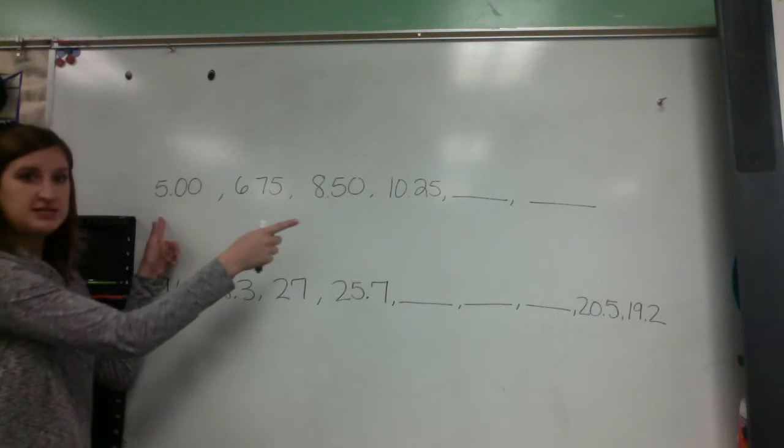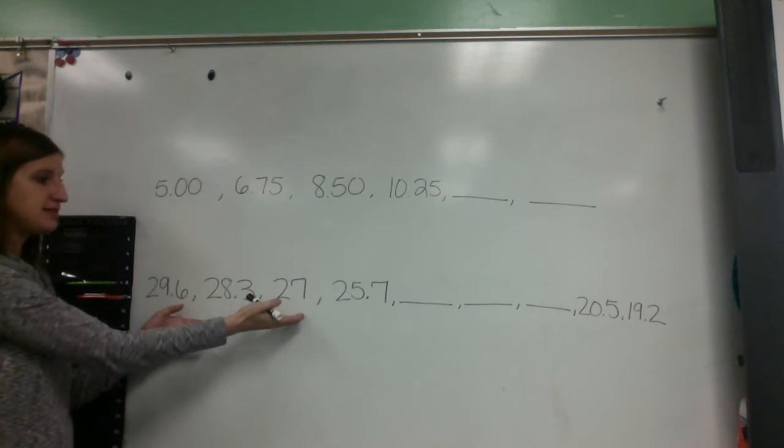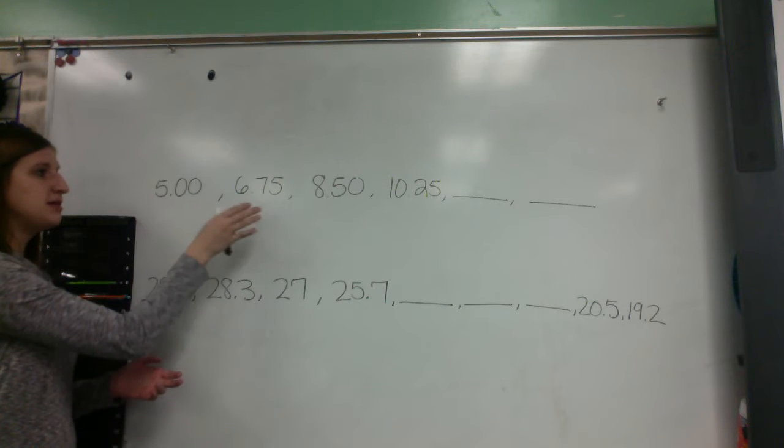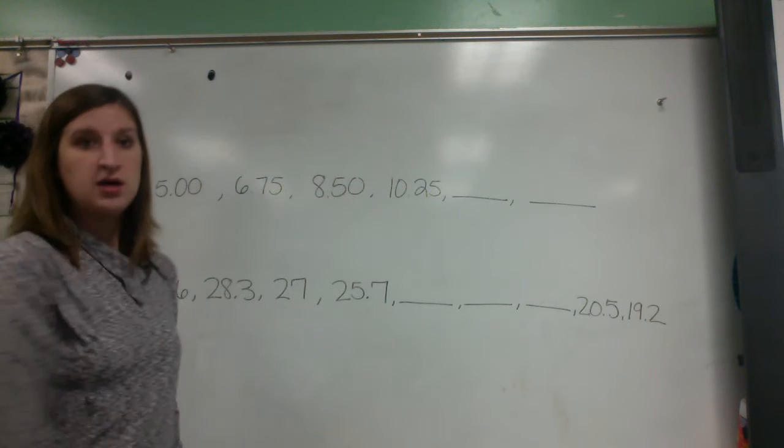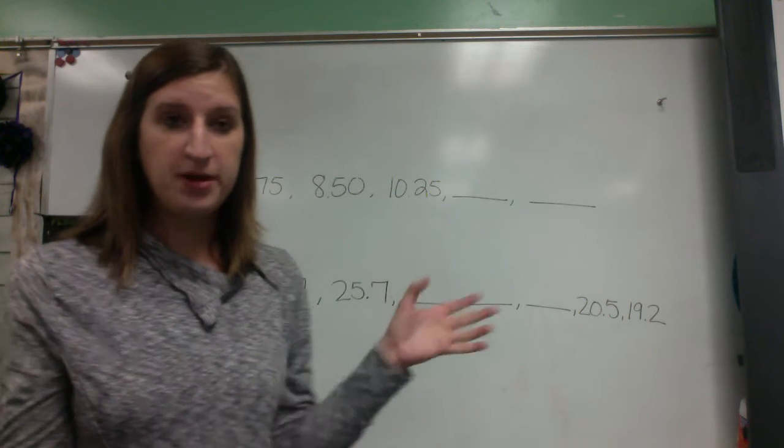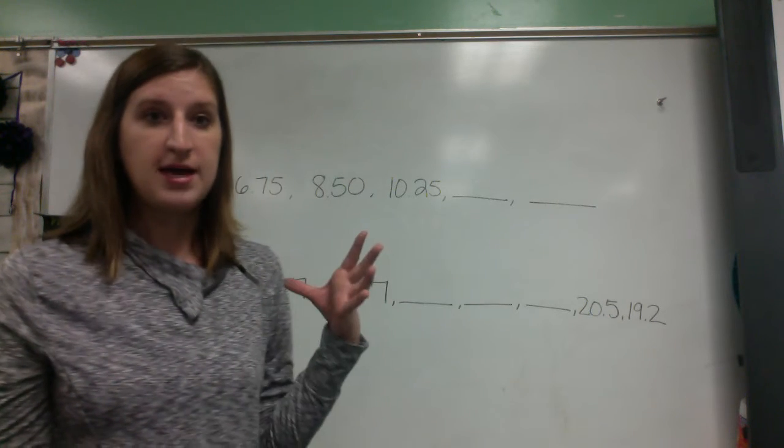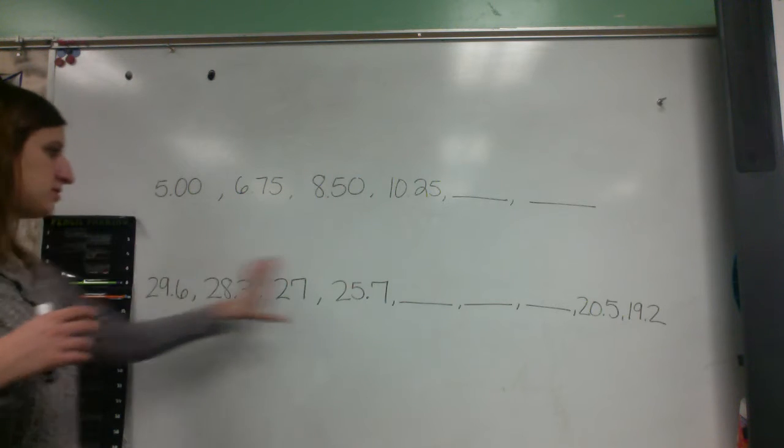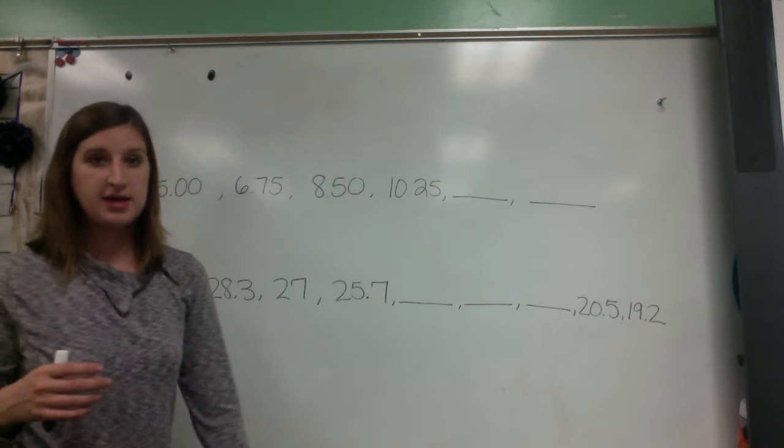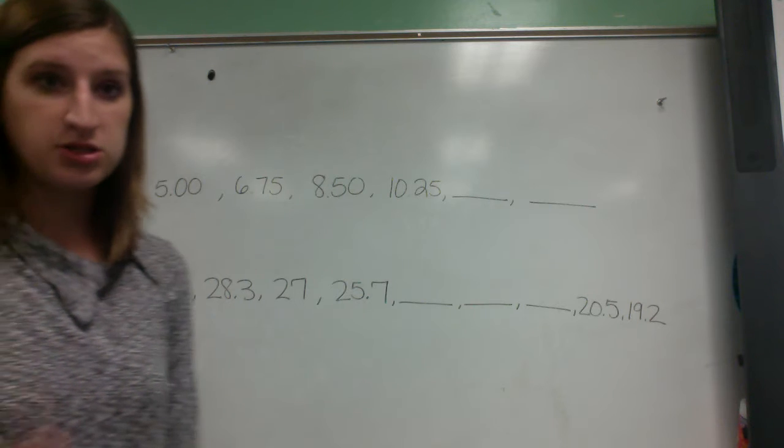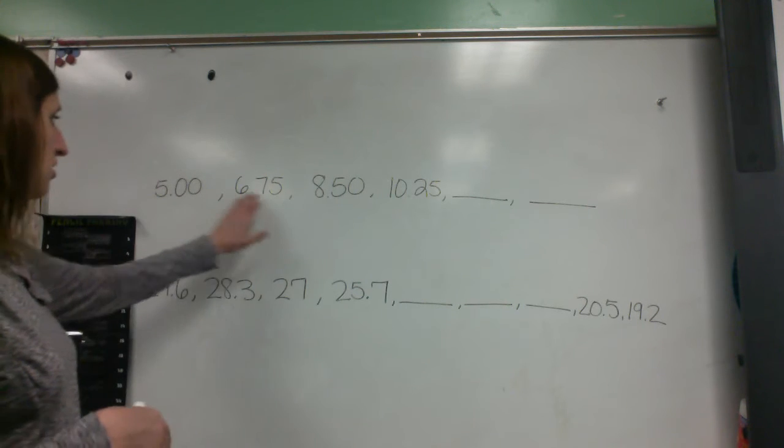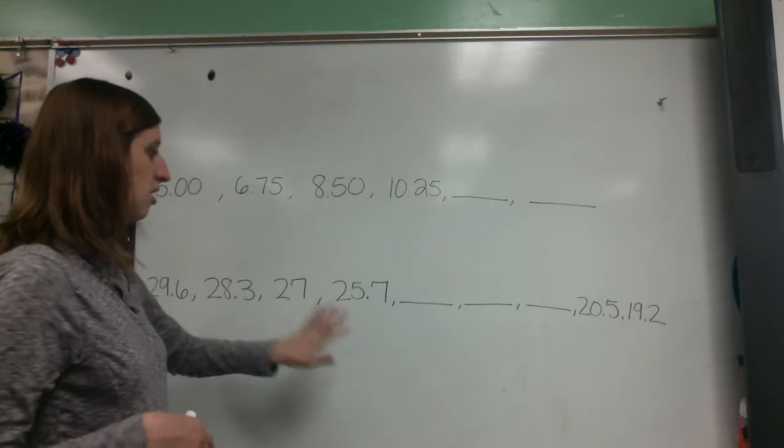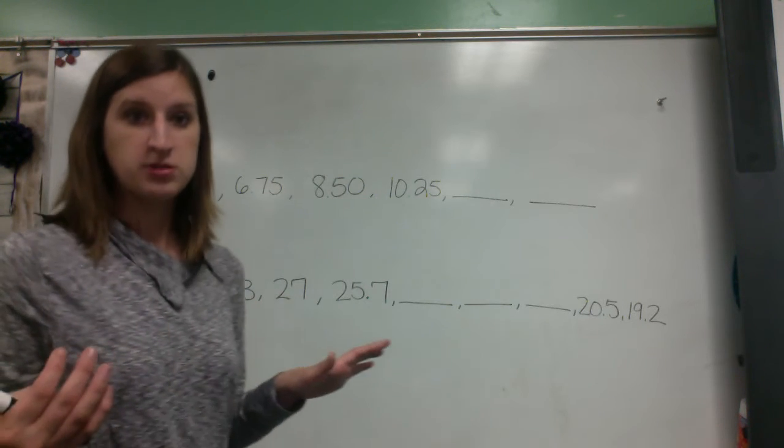This is a data set. This is called a sequence. It is a sequence of numbers that they give us. It's a group of numbers that they have in order that they are giving us. And each of the numbers in a sequence is called a term. So this is a term, that's a term, that's a term, all these individual numbers are terms.